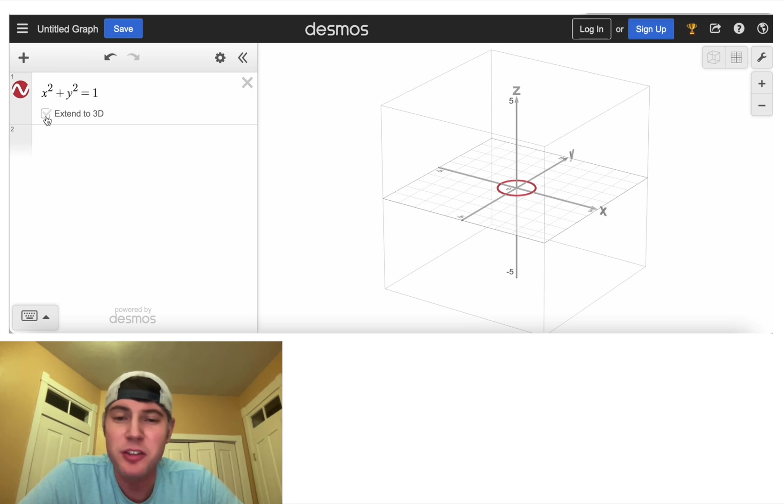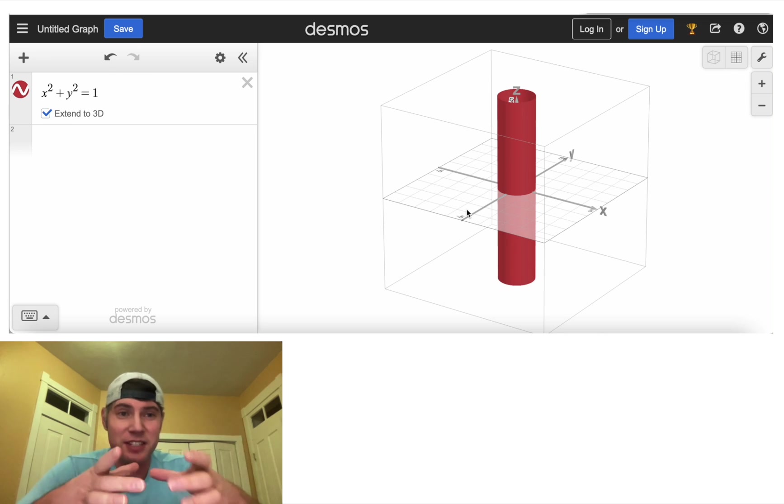If we hit extend to 3D, what it does, it makes a cylinder that goes up and down forever. So the extend to 3D does not make a sphere. It takes that circle and extends it up and down forever.